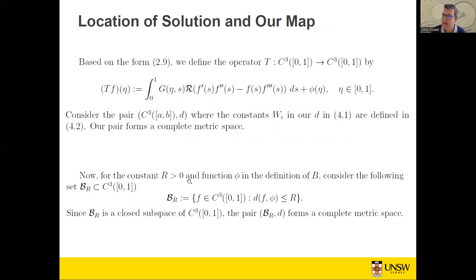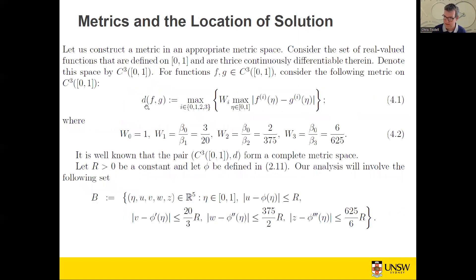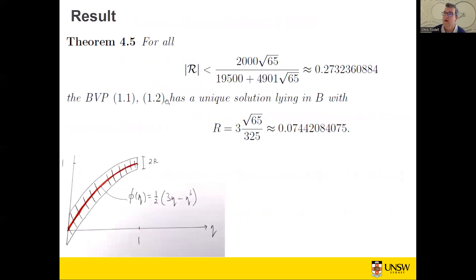Last thing we need to do: what is our set X? Well, X is going to be a ball in C³ where the distance between any function in C³ and our homogeneous solution phi is less than or equal to R, where R is some positive number. Because this is a closed subspace, this subject to the metric forms a complete metric space.